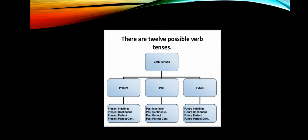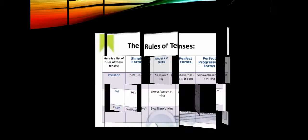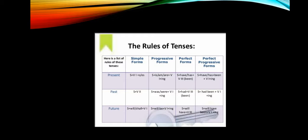Now the rules of tenses: in the simple form, for simple present tense the structure is subject plus verb one (base form) plus object. For simple past tense it is subject plus verb two plus object. For simple future tense it is subject plus will or shall plus verb one (base form).